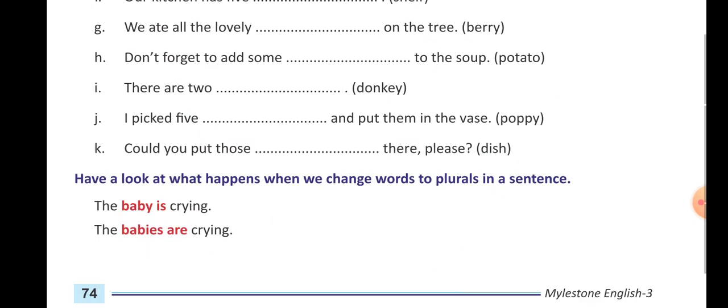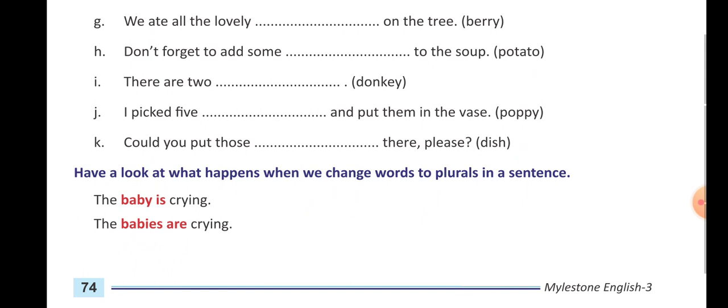Next step: we ate all the lovely berries on the tree, B-E-R-R-I-E-S. We remove Y and add I-E-S. H number: don't forget to add some potatoes to the soup, P-O-T-A-T-O-E-S, potatoes.